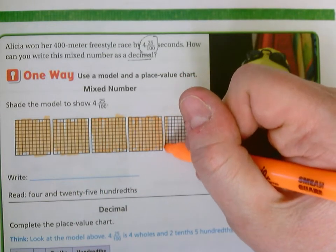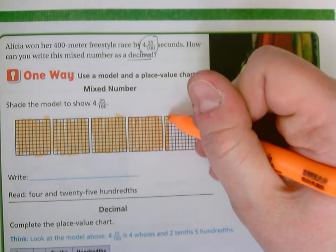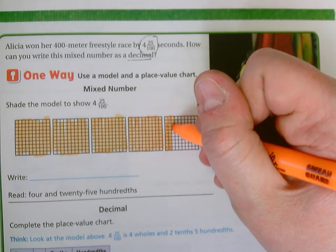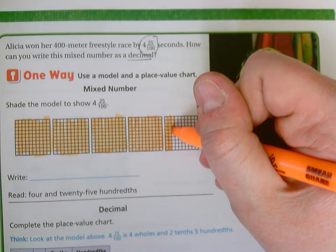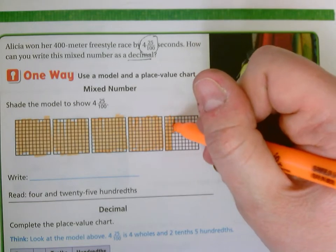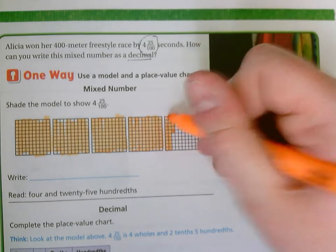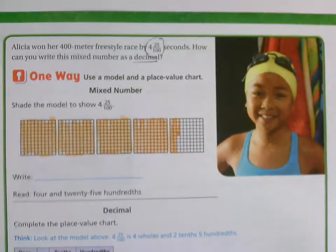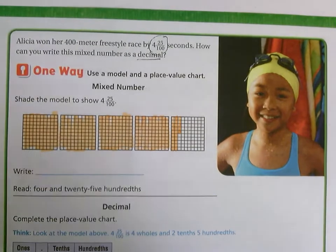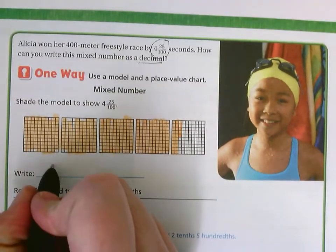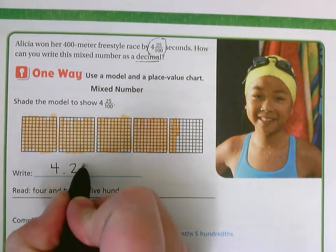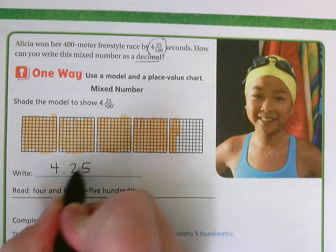So let's see — that's ten, twenty, one, two, three, four, five. So that is how I can show four and twenty-five hundredths.